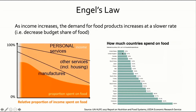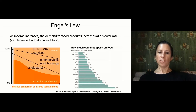This graph compares countries by household expenditures on food. The U.S. spends very little — just 6.5% of household income on food. Other high-income countries like the UK, Canada, Germany, South Korea, Japan, and France are similar. But at the bottom, Nigeria, Cameroon, and Pakistan spend 40, 50, or 60% of their entire income on food, leaving much less to be spent on other goods and services.